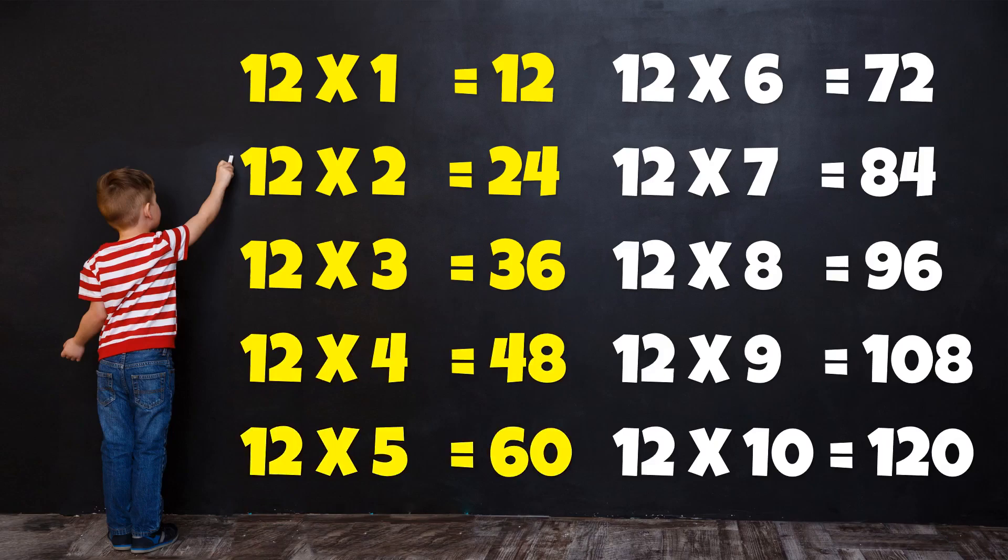12 5s are 60, 12 6s are 72, 12 7s are 84, 12 8s are 96, 12 9s are 108, 12 10s are 120.